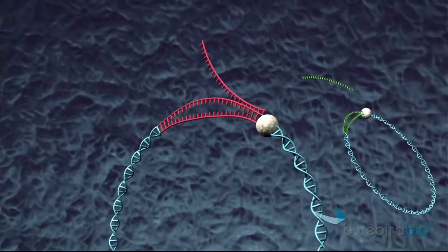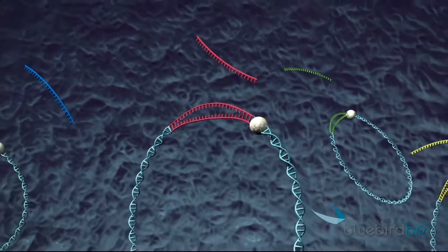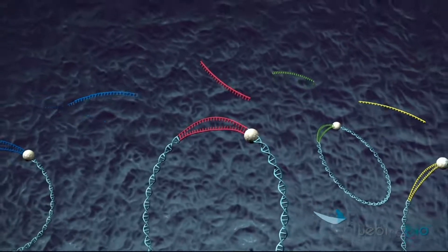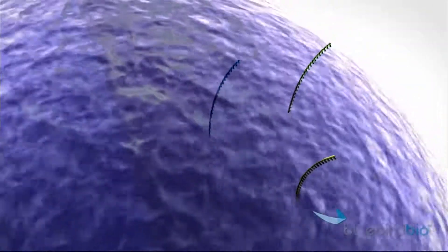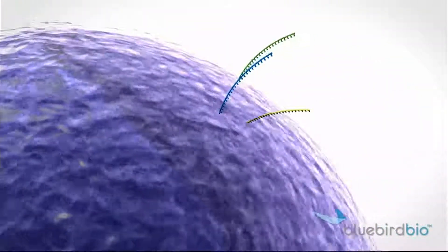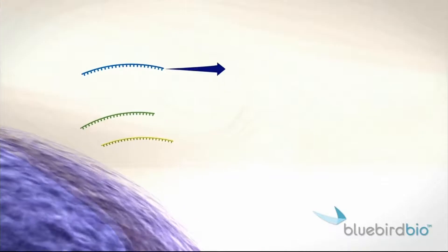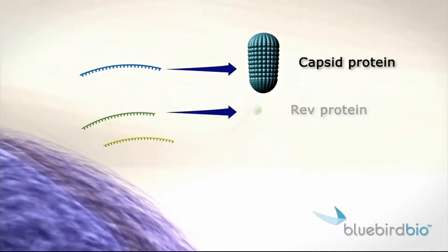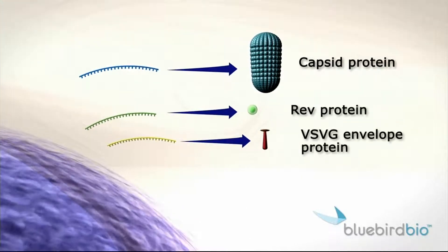It reads them, as you can see here. It produces four pieces of RNA. Three of them bug out of the nucleus, go out there and produce the three components we need: capsid, a red protein, and the VSVG envelope.